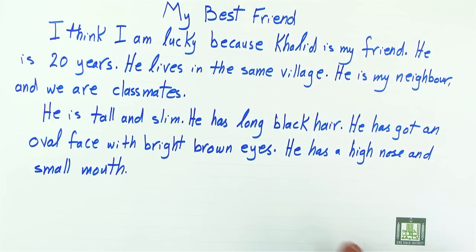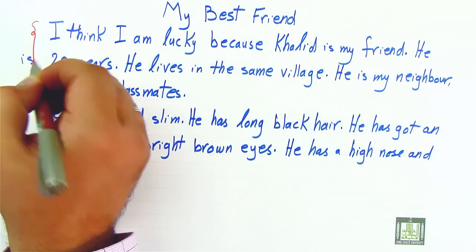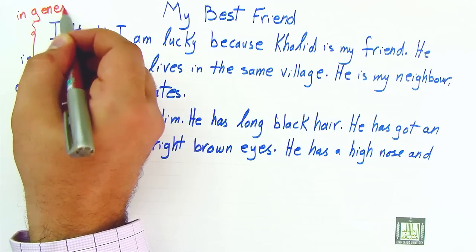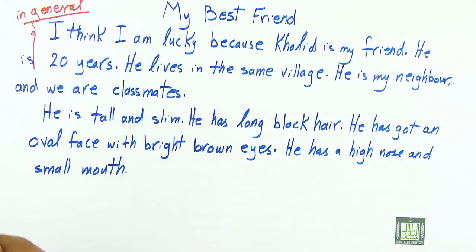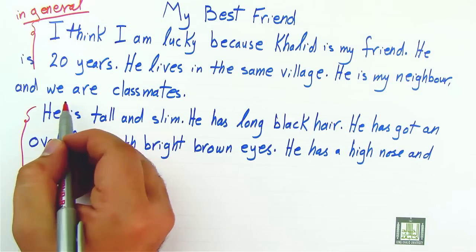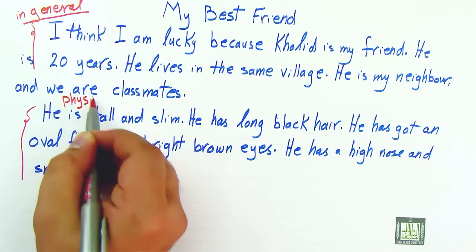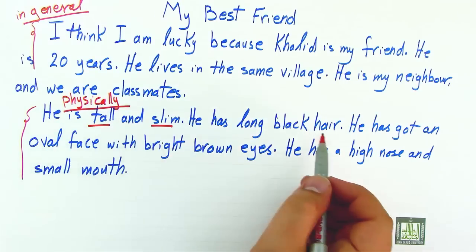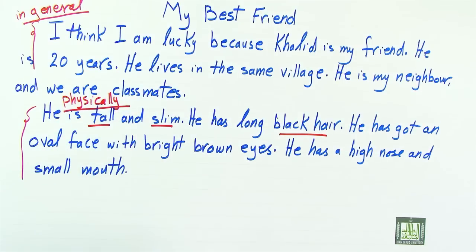Now notice that we start with describing him in general, and then we start describing him physically. It means how he looks — tall, slim — and what he has got: black hair, oval face, etc.